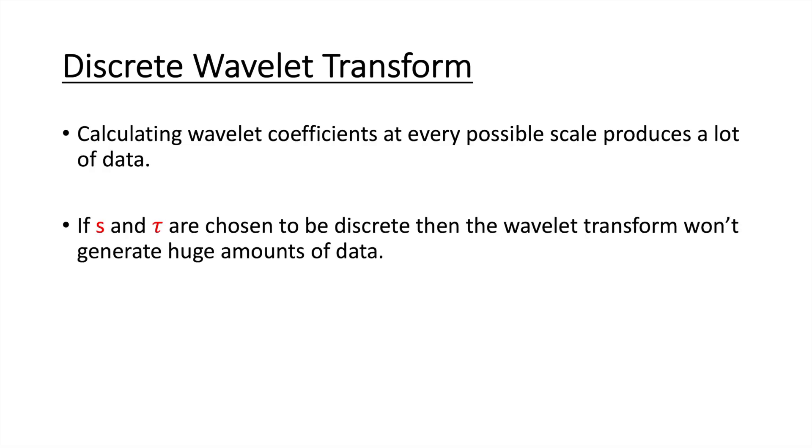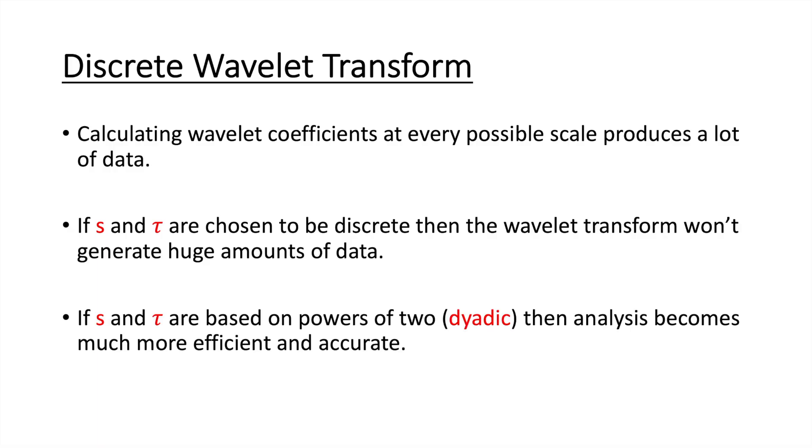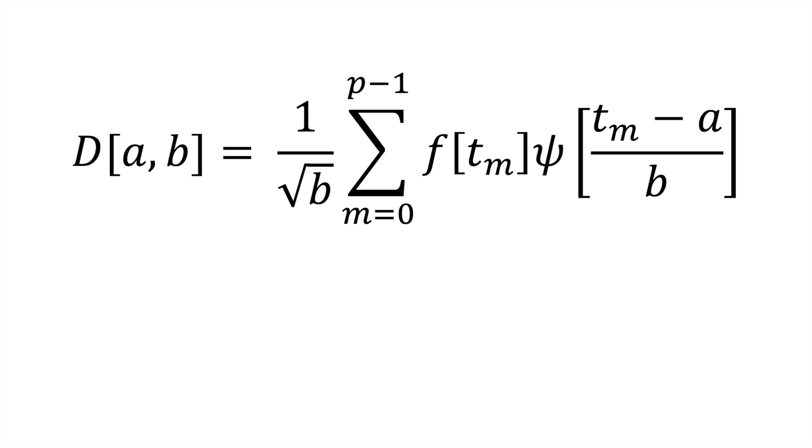So let's move on to the discrete wavelet transform. Calculating wavelet coefficients at every possible scale produces a lot of data. If s and tau are chosen to be discrete, then the wavelet transform won't generate huge amounts of data. If s and tau are based on powers of 2, which is called dyadic, then analysis becomes much more efficient and accurate. So this is the discrete wavelet transform. We have a representing tau and b is s. We've gotten rid of the integral and replaced it with a sum, which you'd expect for discreteness. A and b are now, as I said, dyadic.